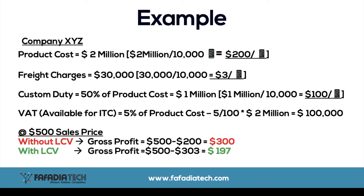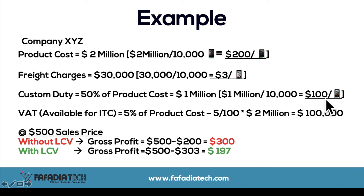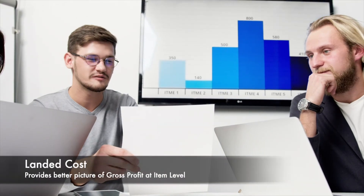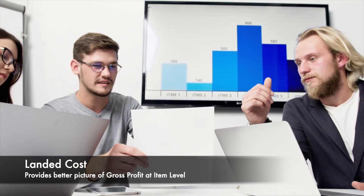With the help of landed cost voucher, we can include the expenses incurred to procure the goods in valuation of the item. We can include the freight cost of 30,000 dollars divided by 10,000 pieces equal to 3 dollars, and custom duty of 1 million divided by 10,000 pieces equal to 100 dollars in the valuation of the item, which will now be 303 dollars. Now the gross profit at 500 dollars selling price will be equal to 500 minus 303 equal to 197 dollars. Thus, considering landed cost provides decision makers a better picture of profitability at the item or product level.